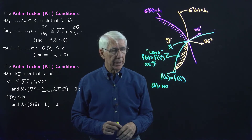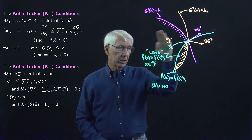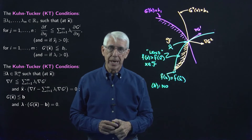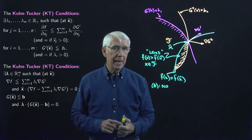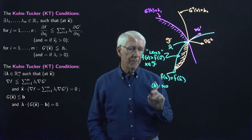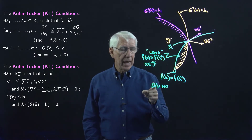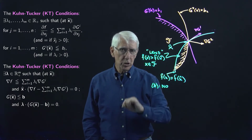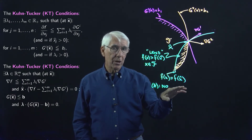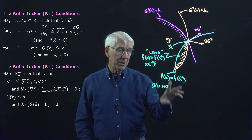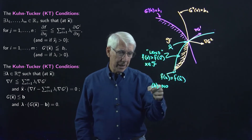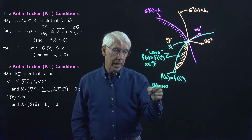Now let's check the Kuhn-Tucker conditions. Clearly all the concavity and convexity requirements are satisfied, so it had better be the case that the Kuhn-Tucker conditions are not satisfied, because if the Kuhn-Tucker conditions are satisfied and they're a sufficient condition, then X hat being a solution would have to be true — and it's not.